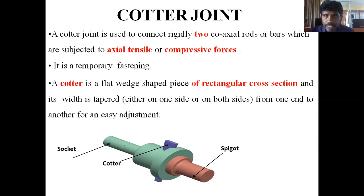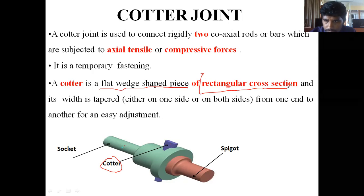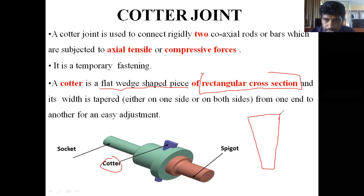Now, what is a cotter? As shown in the figure, this part is called a cotter. It is a flat wedge-shaped piece of rectangular cross-section. It will be rectangular in shape — a wedge shape of rectangular cross-section — and its width is tapered on either one side or both sides.